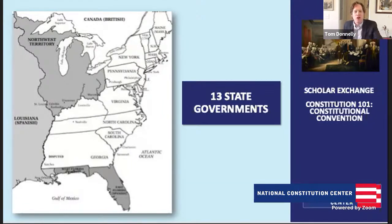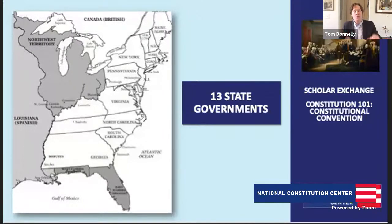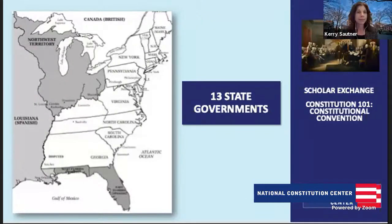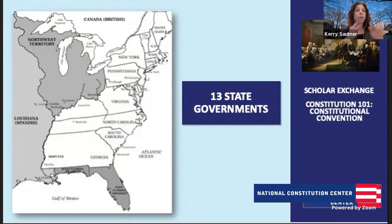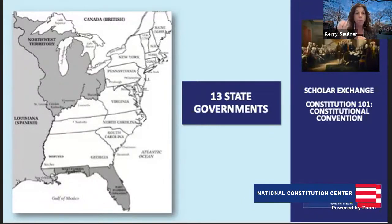During this period we also created state constitutions — an amazingly exciting moment, state by state coming up with new frameworks of government. Generally those governments had very strong legislatures and very weak governors. The Articles of Confederation were intentionally weak because it was just a league of friendship — we agreed to work together, but were very paranoid about giving anybody more power than others. There were lessons learned both from state constitutions and from what was holding this league of friendship back.